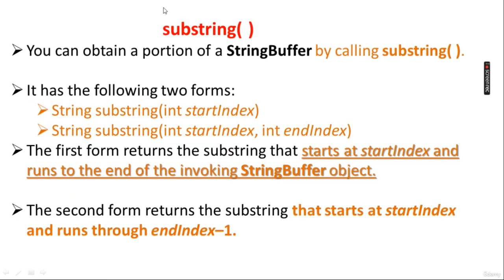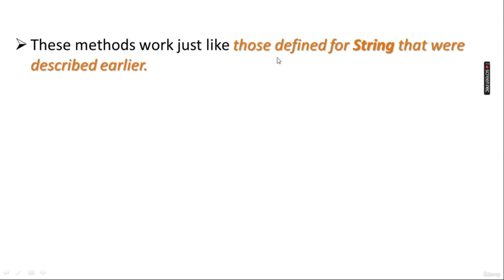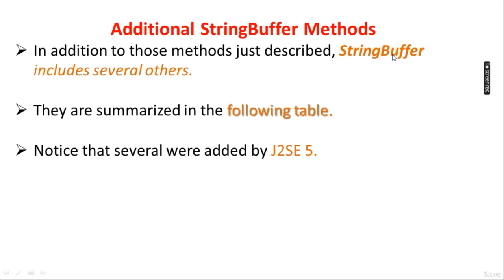To obtain a portion of a StringBuffer, use substring(startIndex) — the first form returns the substring that starts at startIndex and runs to the end of the invoking StringBuffer object. These methods work just like those defined for String that we saw earlier.